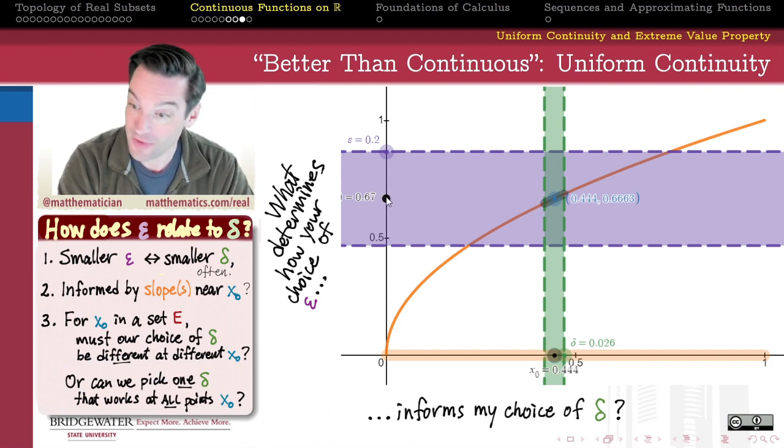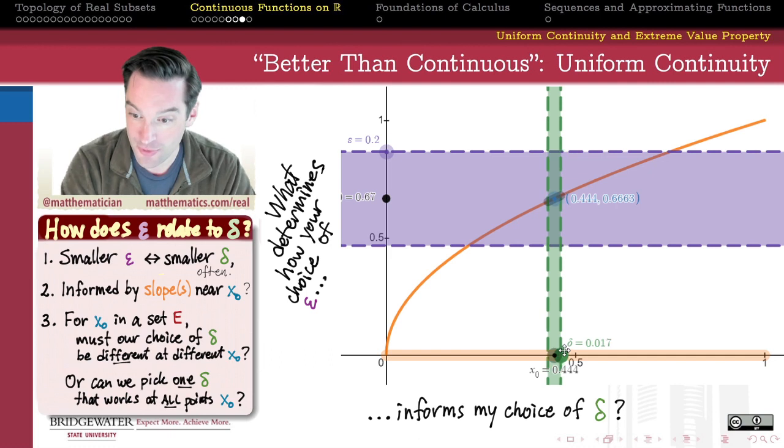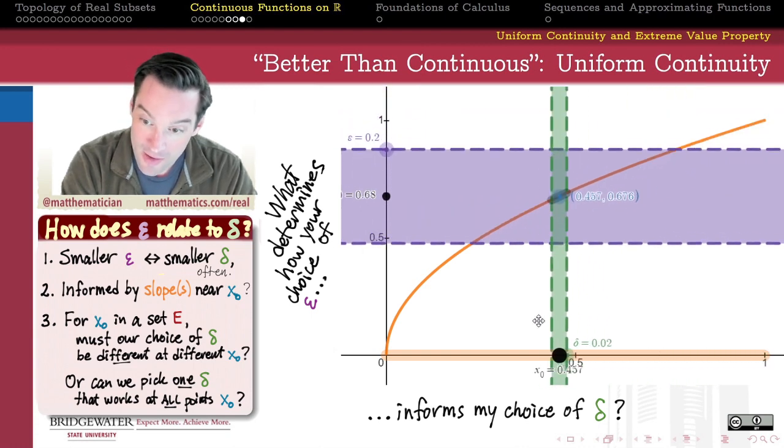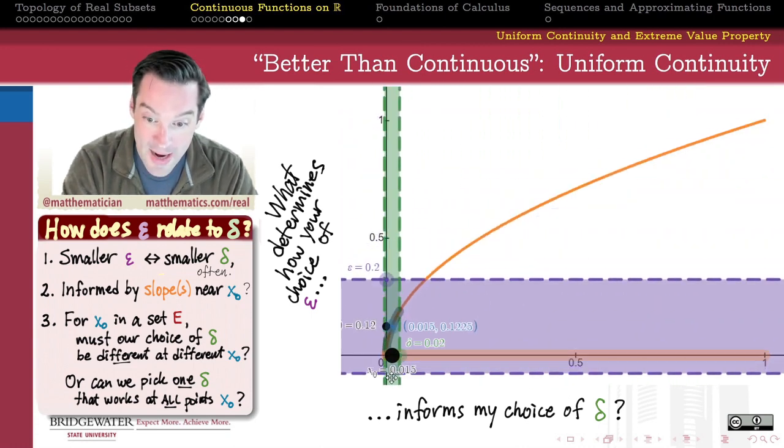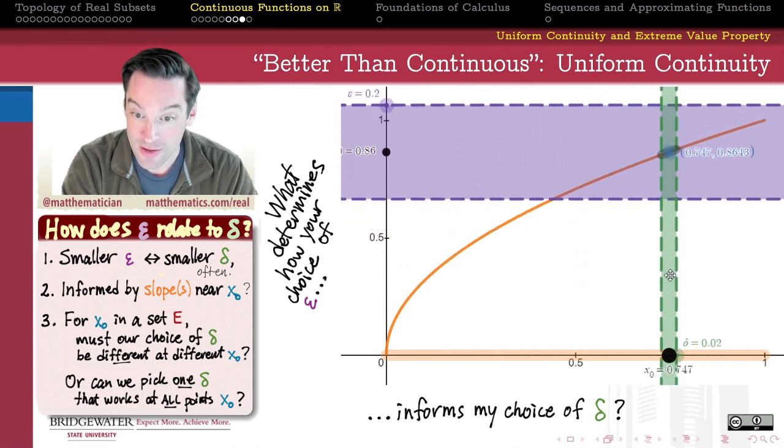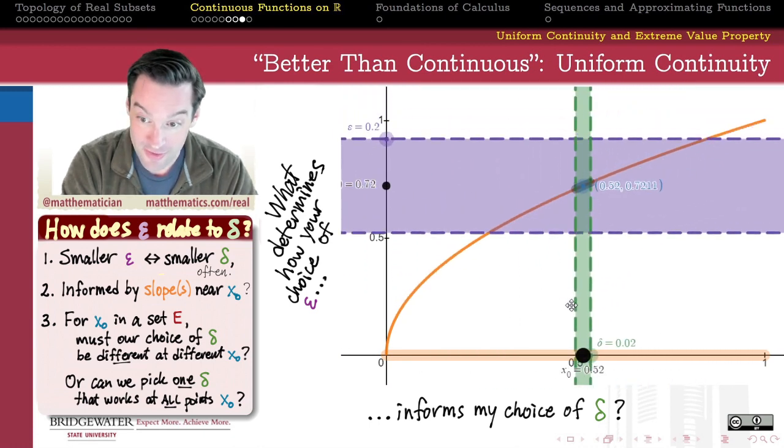So if you give me epsilon equals 0.2 in this example, I can choose a delta like delta equals 0.02. So it happens to be one tenth as large as epsilon in this example, right? Such that all of the x's that are delta close to any point x0 will have their y values be epsilon close to f of x0.